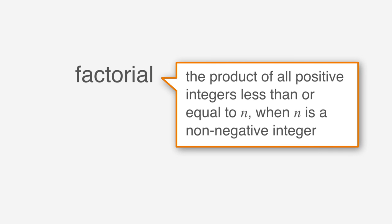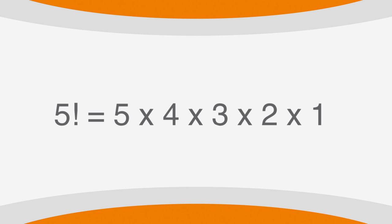The factorial is the product of all positive integers less than or equal to n when n is a non-negative integer. For instance, 5 factorial would be 5 times 4 times 3 times 2 times 1.